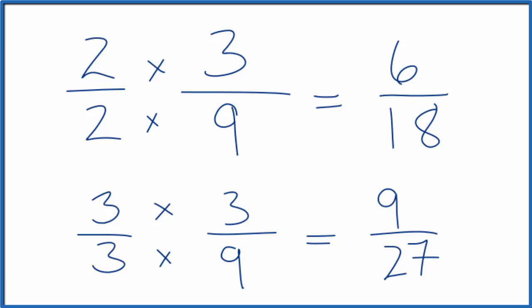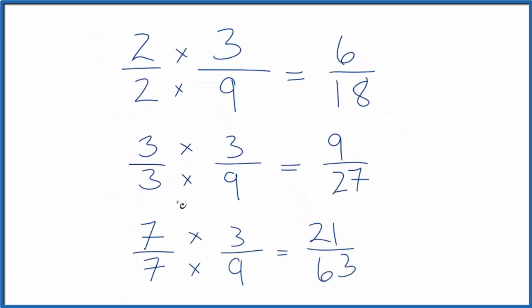One last one. How about 7 over 7? So again, we're multiplying by 1, but we're changing the numerator and the denominator. The value still stays the same. 21 divided by 63 is equal to 3 divided by 9, because they're equivalent fractions.